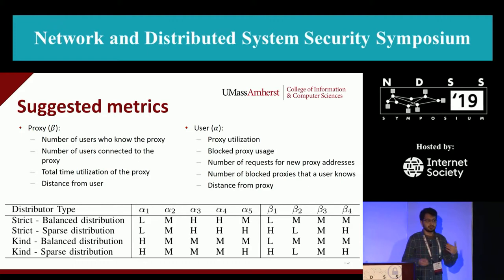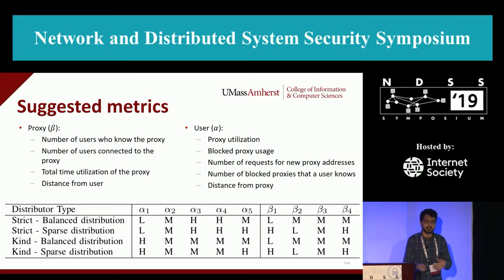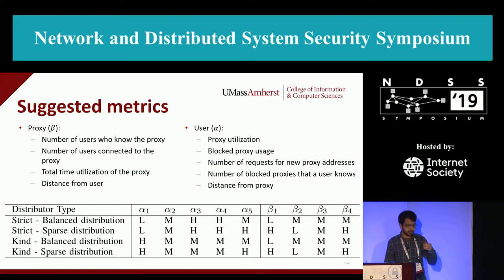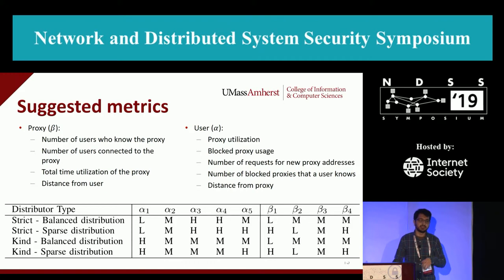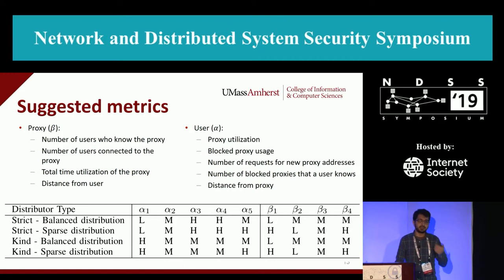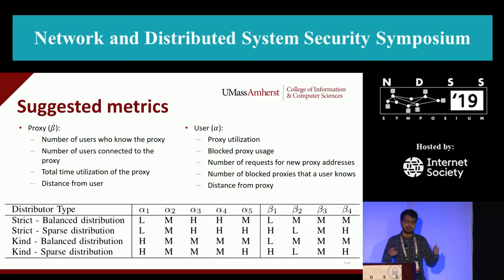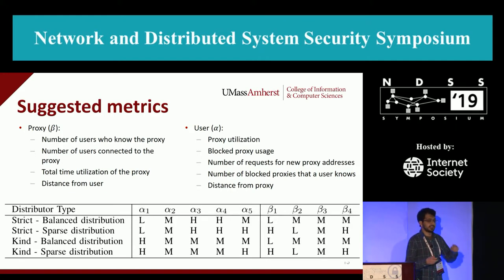To compare our work to previous work, we came up with common metrics used in current censorship circumvention tools — for example, the location of users and how much users use a proxy. We use a linear combination of these metrics to define our utility functions, and we weighted these features differently to compare the effect of each feature on our results.